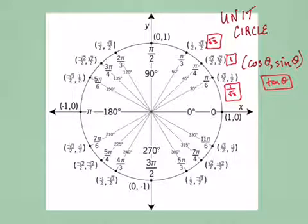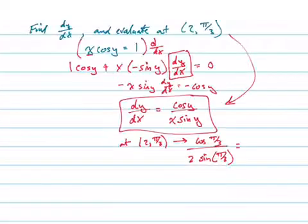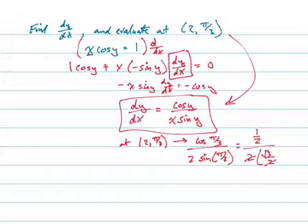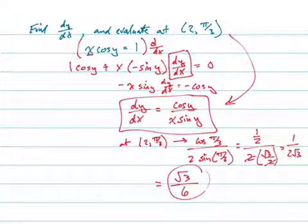π/3 cosine is 1/2. So 1/2 over 2 root 3 over 2, those cancel. That equals 1 over 2 root 3, which simplifies to root 3 all over 6, multiplying by root 3 over root 3.